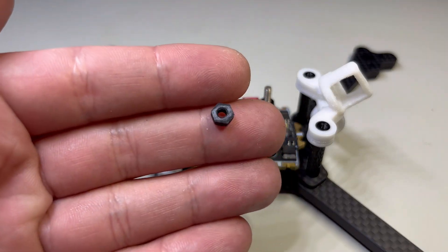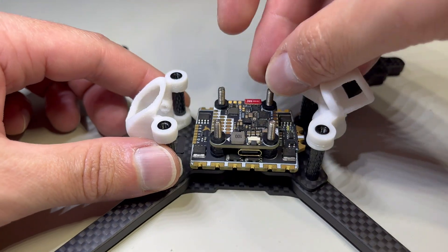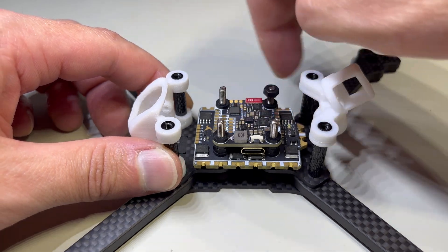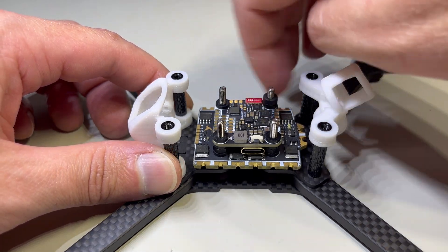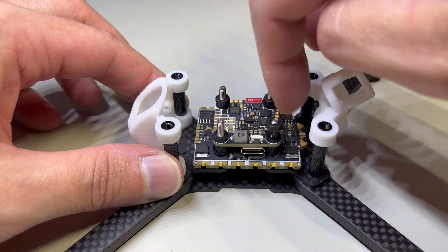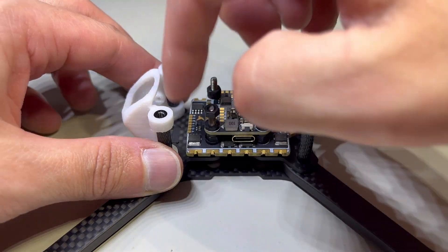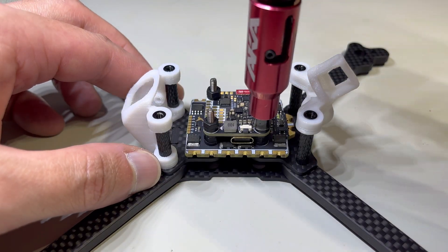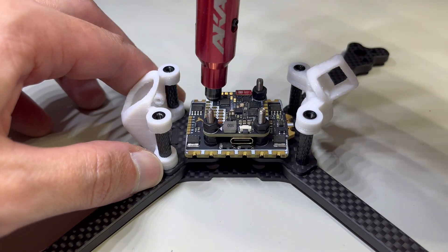So once we have the flight controller on there, we'll do another layer of the nylon stack nuts. And again, we'll get these hand tight first. Once we get them hand tight, we can go in with the wrench and snug them down. Very important that you don't tighten them too much. You don't want to smash the gummies. Once again, you just want it about hand tight with the wrench.